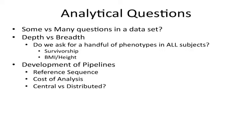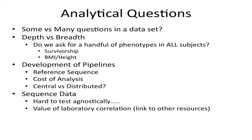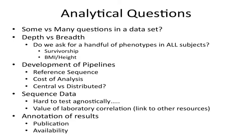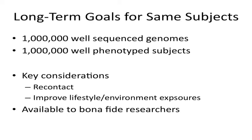The development of pipelines with reference sequences Rick raised is so important — even that dynamic change has real implications for what we call and how we call them. Certainly the cost of analysis, central versus distributed: we'd all like to be distributed, but there is a role for a certain amount of central processing to be sure we develop the right pipelines. And the sequence data is really hard to test agnostically. As we get to rarer and rarer variants, it becomes more and more important. When you look at exomes and you see 18,000 variants you've never seen before and start categorizing them, to really interpret them we're going to have to use other information — that annotation of results is really important.